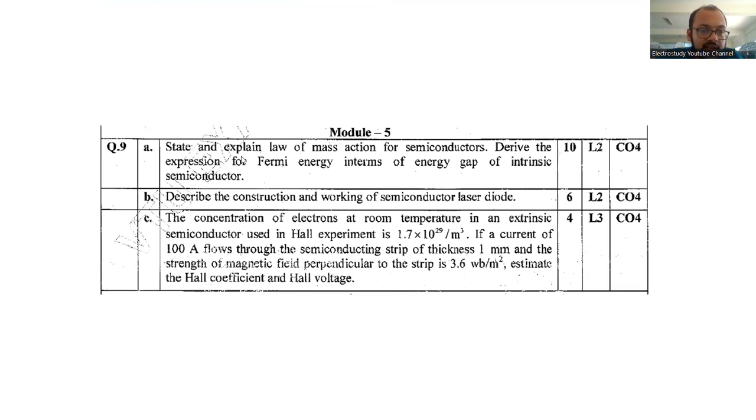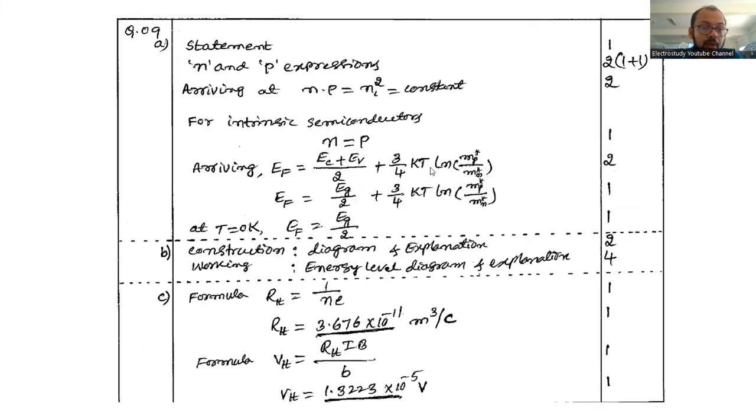Question number 9: State and explain the law of mass action of semiconductors. Derive the expression for Fermi energy in terms of energy gap of intrinsic semiconductor. You should know what is the difference between semiconductor, conductor, insulator, and the differences between intrinsic and extrinsic semiconductors. Law of mass action also you might be familiar. Let's have a look on the question bank. So statement is needed regarding the n and p expressions.